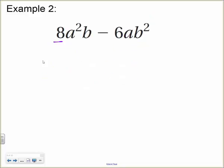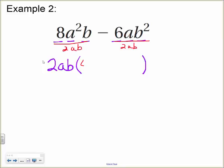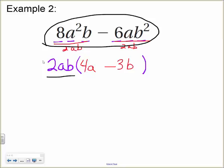Example 2: looking at the coefficients, 8 and 6 have a 2 in common. The a terms have an a to the first in common, and the b terms have a b to the first in common. So the greatest common monomial is 2ab. Dividing each term: 8a²b divided by 2ab gives 4a, and 6ab² divided by 2ab gives 3b. So the factored form is 2ab(4a − 3b) — a monomial factor times a binomial factor.